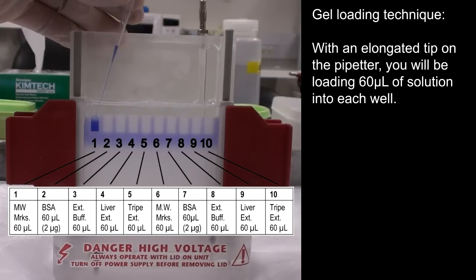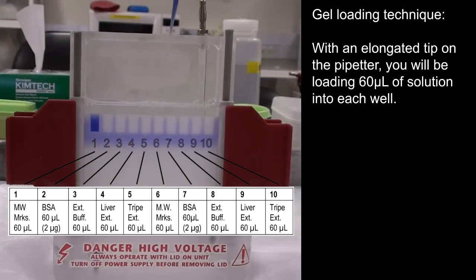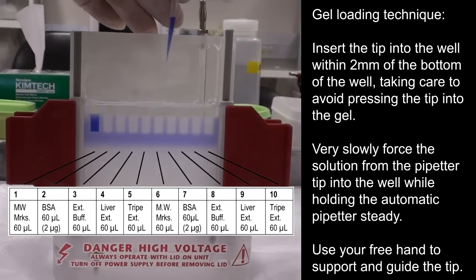With an elongated tip on the pipetter, you will be loading 60 µL of solution into each well. Insert the tip into the well within 2 mm of the bottom of the well, taking care to avoid pressing the tip into the gel.